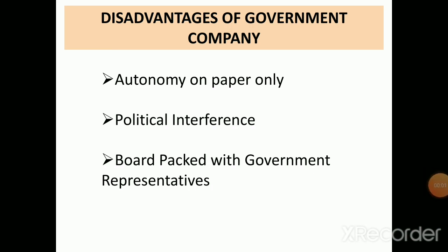In conclusion, the government company form of organization is most suitable where the government wants to control a company in the private sector without nationalization, where it wants to collaborate with a private enterprise, and where the project requires government planning and funds.